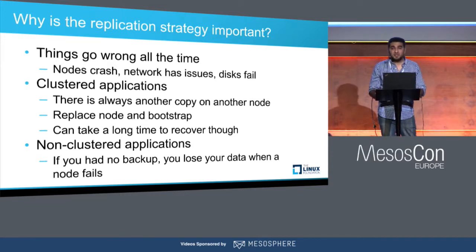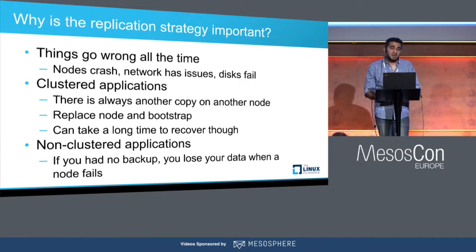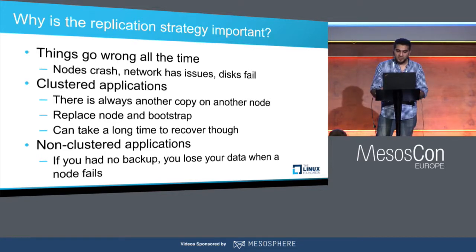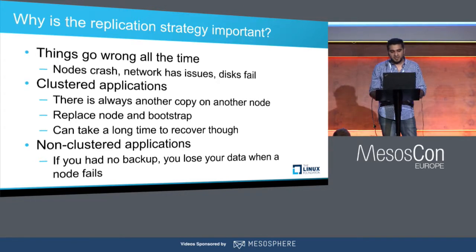However, this repair can take a lot of time depending on how much data was on the node that went down. During that repair time, throughput for that service will drop. For instance, with a Cassandra cluster doing three-way replication where one node goes down, you can only serve reads from two nodes instead of three, and your network takes a hit as data is transferred back to the node being brought up. For non-clustered applications using local storage with no backup, the application would be doomed — you couldn't bring it back up, and physical corruption could mean data loss.